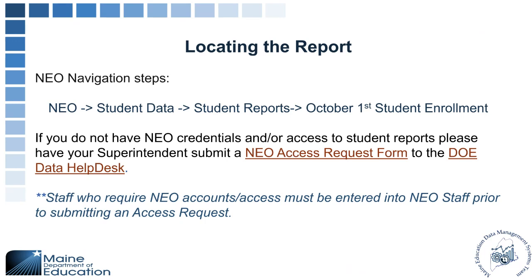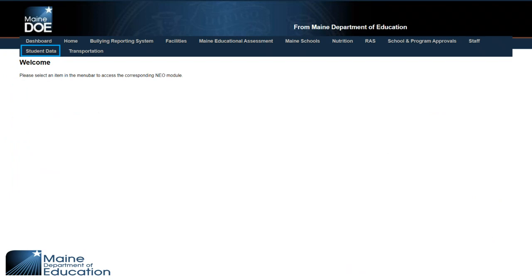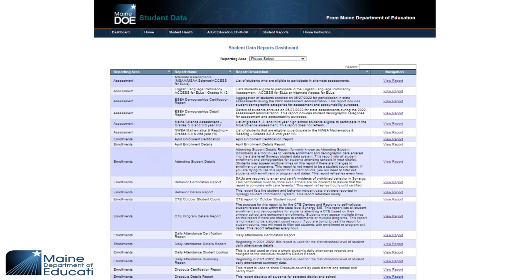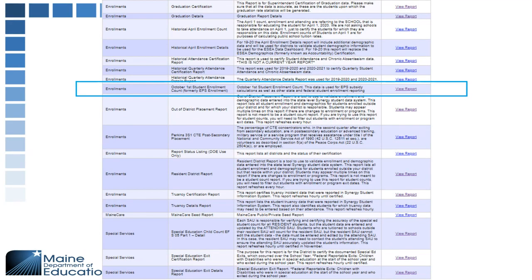To locate the report in NEO, you'll need access to student data. If you do not have access, you will need to have a NEO access request form submitted by your superintendent on your behalf and sent to the help desk. In NEO, go to Student Data, then Student Reports, then October 1st Student Enrollment. These reports are in alphabetical order, so scroll down to find October 1st Student Enrollment.